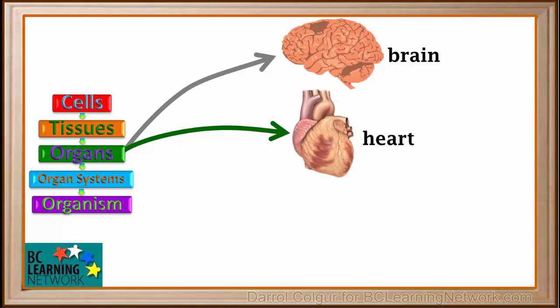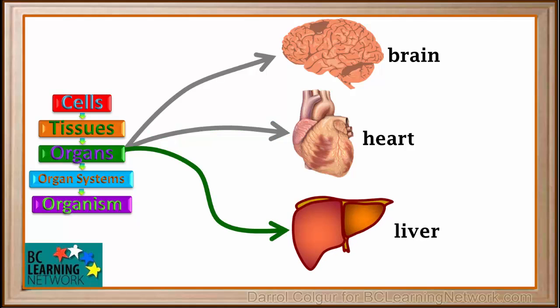The heart is another organ. It is made up largely of muscle tissue, but also has nerve tissue, connective tissue, and epithelial tissue, as well as others. Another important organ is the liver. Like all organs, the liver is made up of a number of tissues.